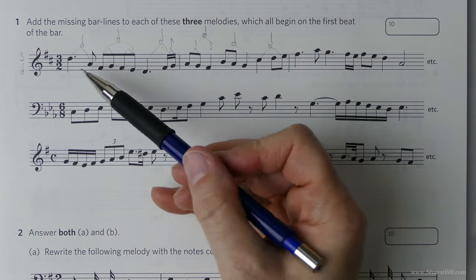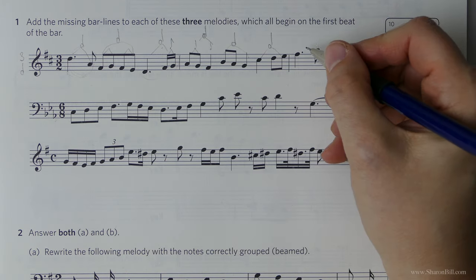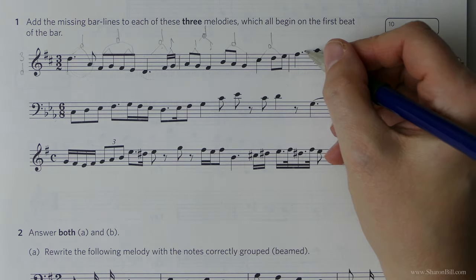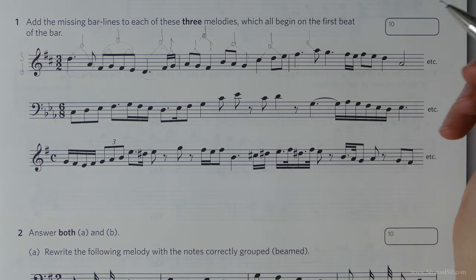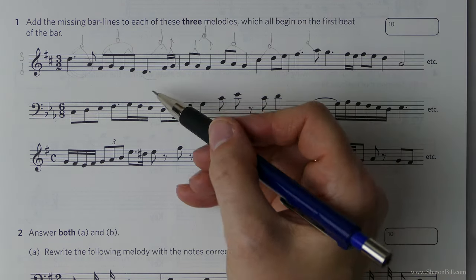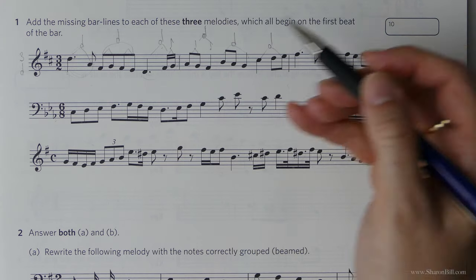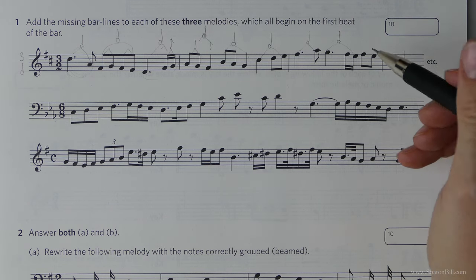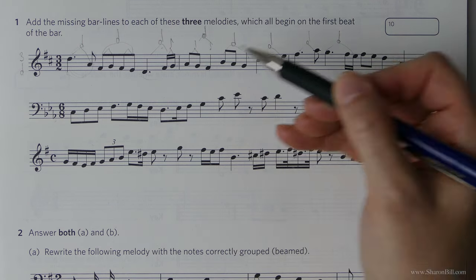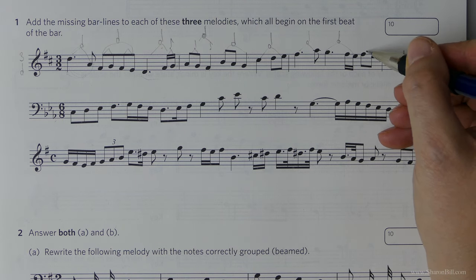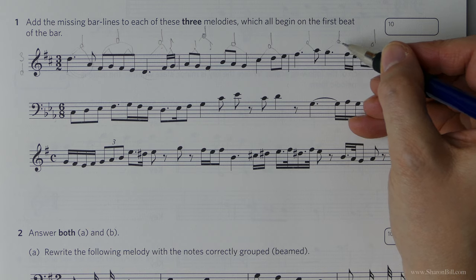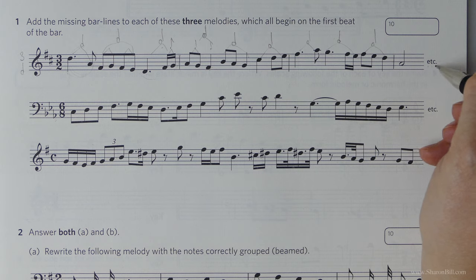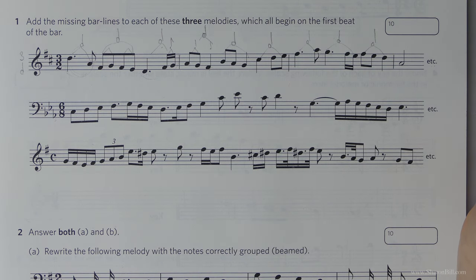We can see we have the same time values here - we're not concerned about the pitch at all, just the note values. There's one minim beat, then another combination we've already looked at giving us a second minim beat, and then quaver, quaver, crotchet - eighth, eighth, quarter - gives us a third minim beat. So there's our one, two, three - bar line. This last bit is incomplete so we carry on.